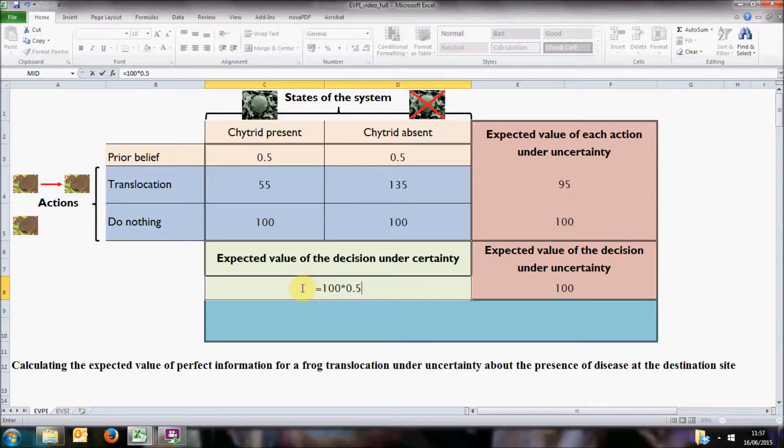On the other hand, if we knew that chytrid was absent from the new site, we would choose to translocate and expect 135 individuals. Again, there is a 50% chance that this is the case.